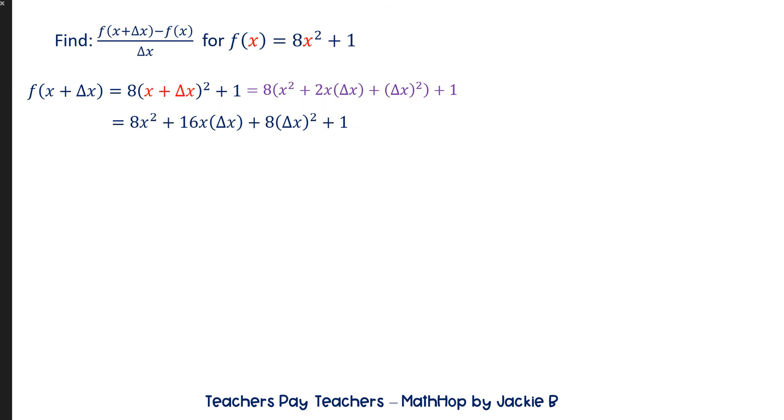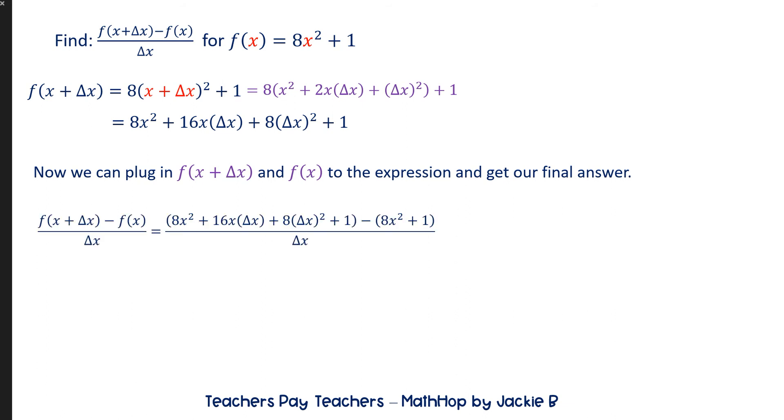So now let's see what we can do. We can take the f of x plus delta x, which we just found, the f of x, which they gave us, and we can plug this all in and get our final answer. All right, so this is ugly, but bear with me. This right here is simply the x plus delta x we already solved for minus f of x that was given to us all over delta x.